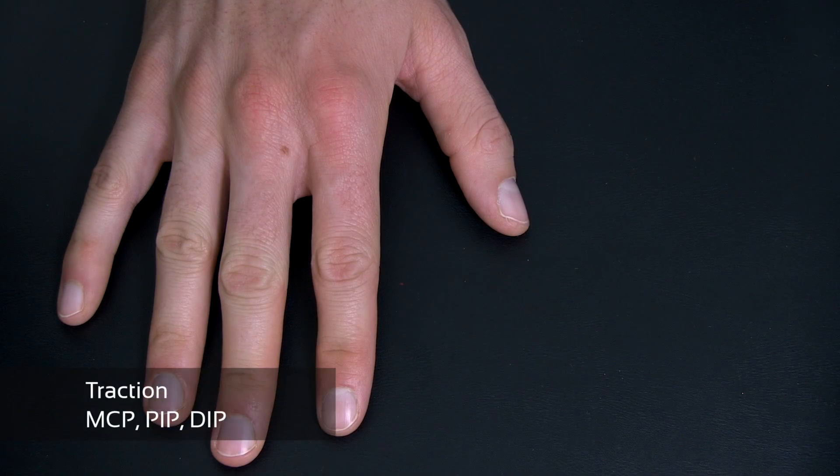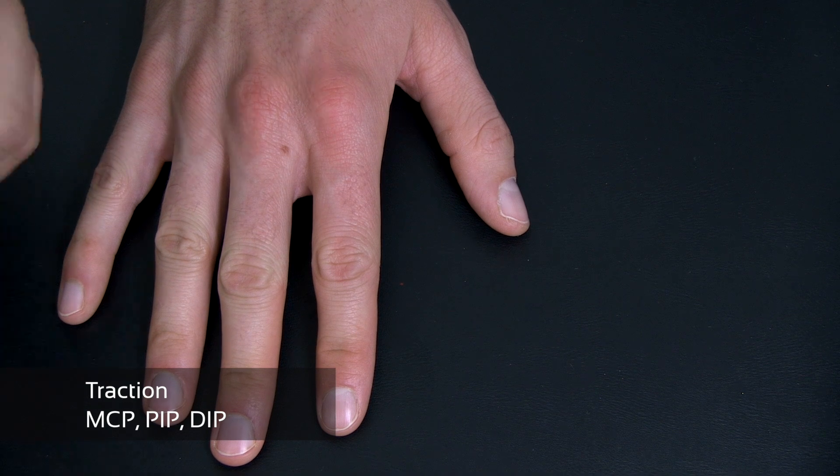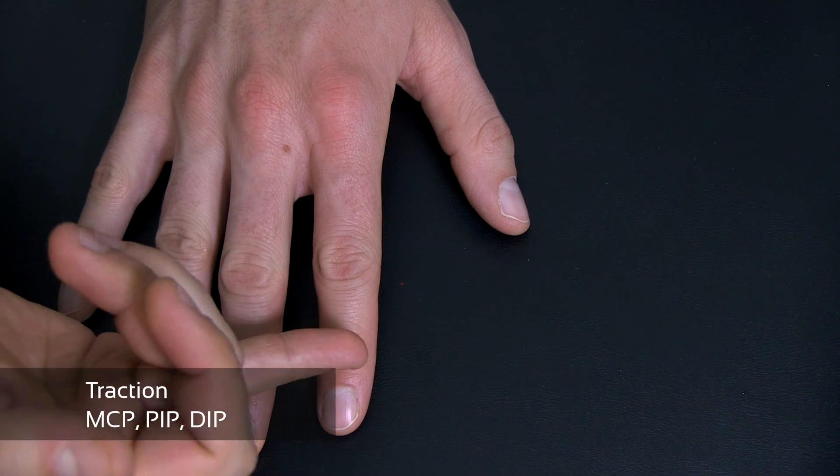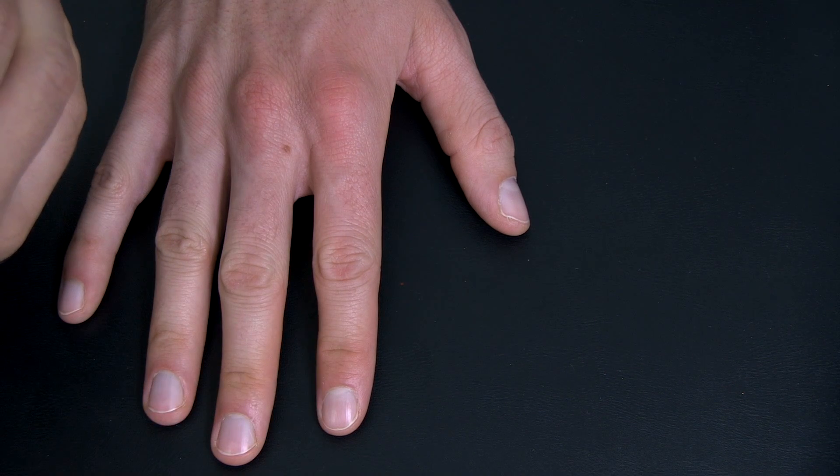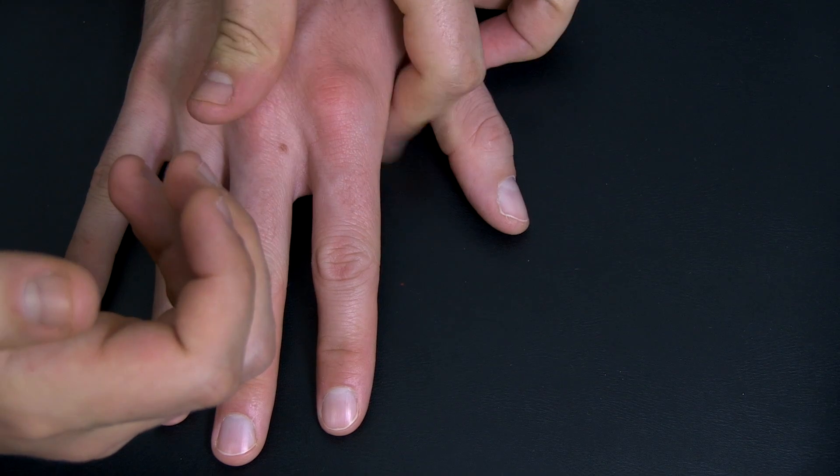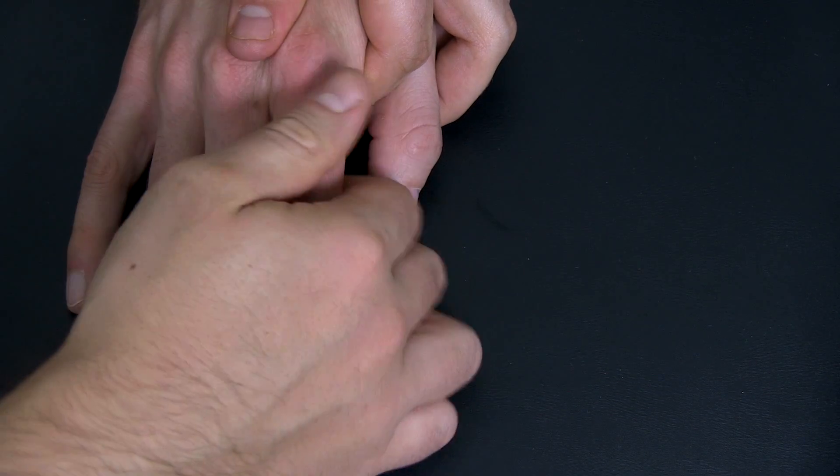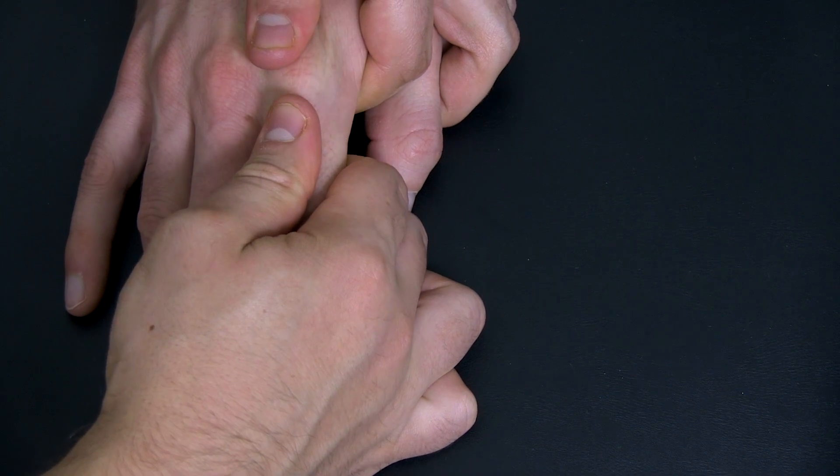Let's continue with traction of the fingers. The technique is the same for the metacarpophalangeal, the proximal interphalangeal, and distal interphalangeal joint. With one hand stabilize the proximal bone while you grab the distal joint partner with the other and apply a longitudinal traction.